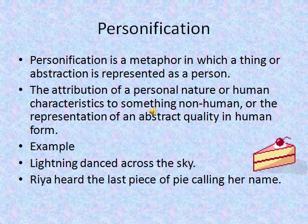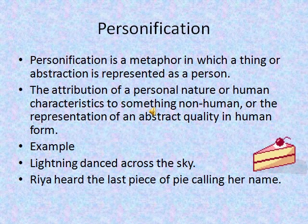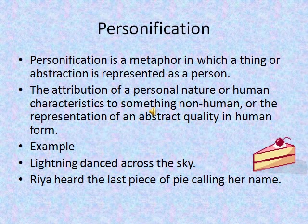Next is personification — a metaphor in which a thing or abstraction is represented as a person. It is the attribution of human characteristics to something non-human, or the representation of an abstract quality in human form. For example: 'lightning danced across the sky' and 'Rhea heard the last piece of pie calling her name.' Lightning cannot actually dance, and a piece of pie cannot speak — we are giving them human qualities.